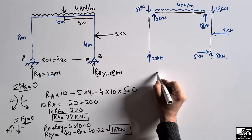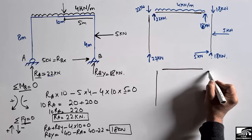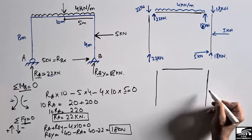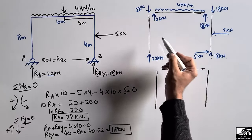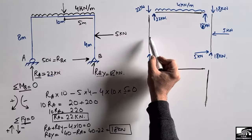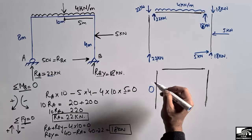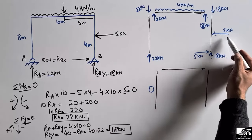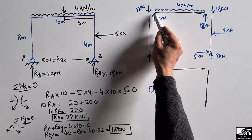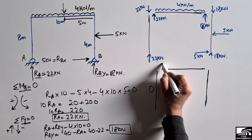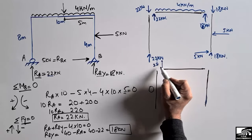To draw the shear force diagram, we first draw reference lines for the beam and columns. The right column has no transverse load, so its shear force is zero. For the left column, the 22 kN reaction acts upward, so the shear force moves upward with a magnitude of 22 kN.